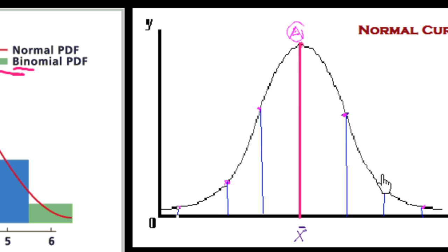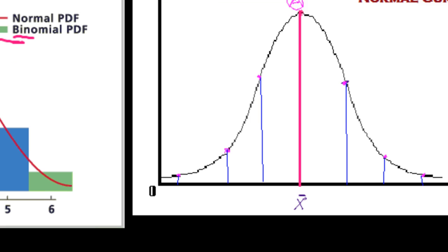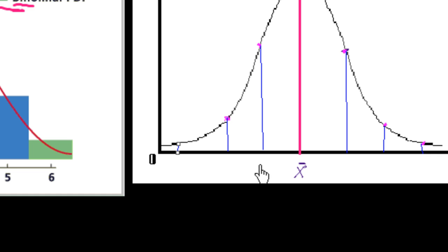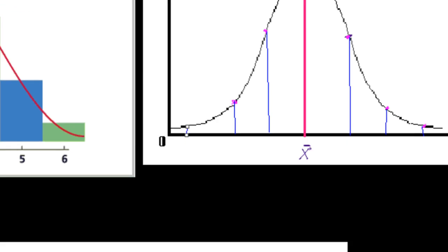The area covered by this curve is 100% up to infinity. Between these lines, the points on the x-axis are x-bar plus sigma, x-bar plus 2 sigma, and x-bar plus 3 sigma, because at each standard deviation the point of inflection occurs on the right side. On the left side we have x-bar minus sigma, x-bar minus 2 sigma, and x-bar minus 3 sigma.